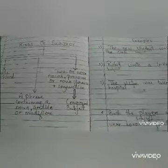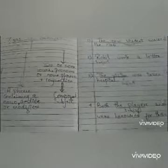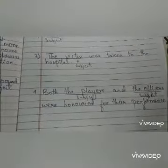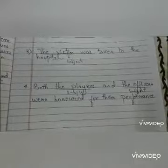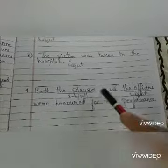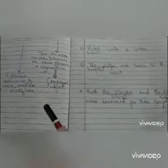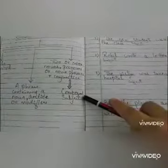The third kind is: a subject can be two or more nouns, pronouns, or noun phrases that may be joined by any conjunction. This we have seen in the last example — 'Both the players and the officers were honoured for their performance.' We had two nouns, 'the players' and 'the officers,' acting as our subject, joined by the conjunction 'and.' Any sentence which has two or more subjects is known as a compound subject.